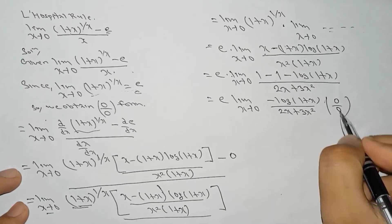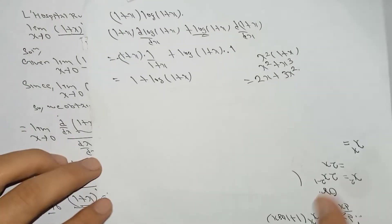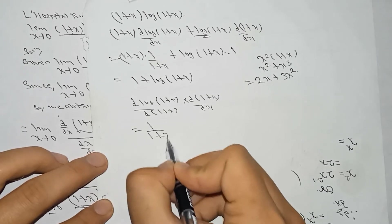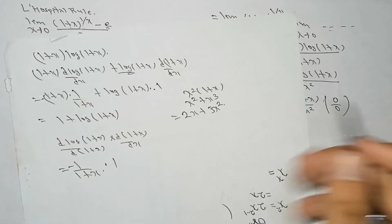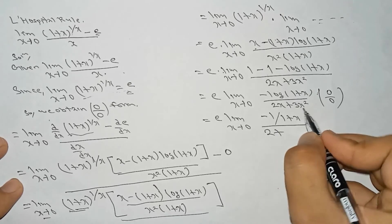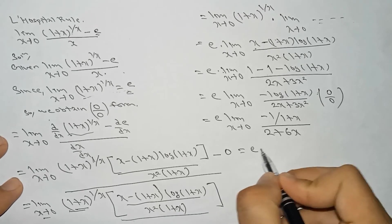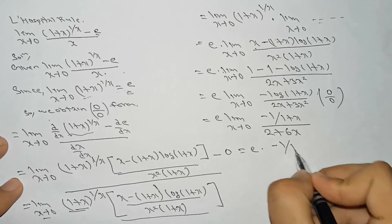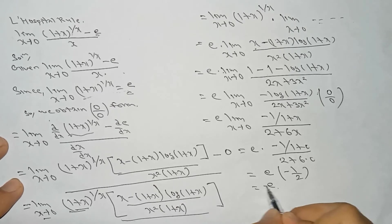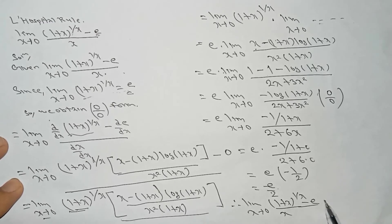This is again in the 0 by 0 form, so we differentiate again. The derivative of minus log(1 plus x) is minus 1 by (1 plus x) times 1. The derivative of 2x plus 3x squared is 2 plus 6x. Now it is not in the 0 by 0 form, so we put x tends to 0: e times [minus 1 by (1 plus 0)] divided by (2 plus 6 times 0) equals e times (minus 1 by 2), which equals minus e by 2. Therefore, limit x tends to 0 of [(1 plus x) to the power 1 by x, minus e] divided by x equals minus e by 2.